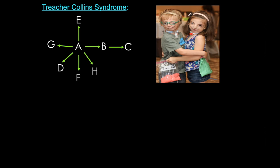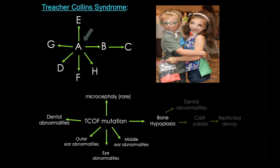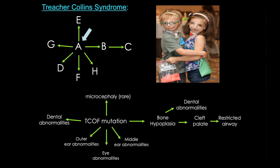Treacher-Collins syndrome has very characteristic facial anomalies, and it arises from a single defect in the TCOF gene. There are many anomalies that can result from this mutation, although they don't all have to occur. Within Treacher-Collins syndrome, there are also sequences — for example, bone hypoplasia can lead to dental abnormalities, but it can also lead to cleft palate, which leads to a restricted airway.